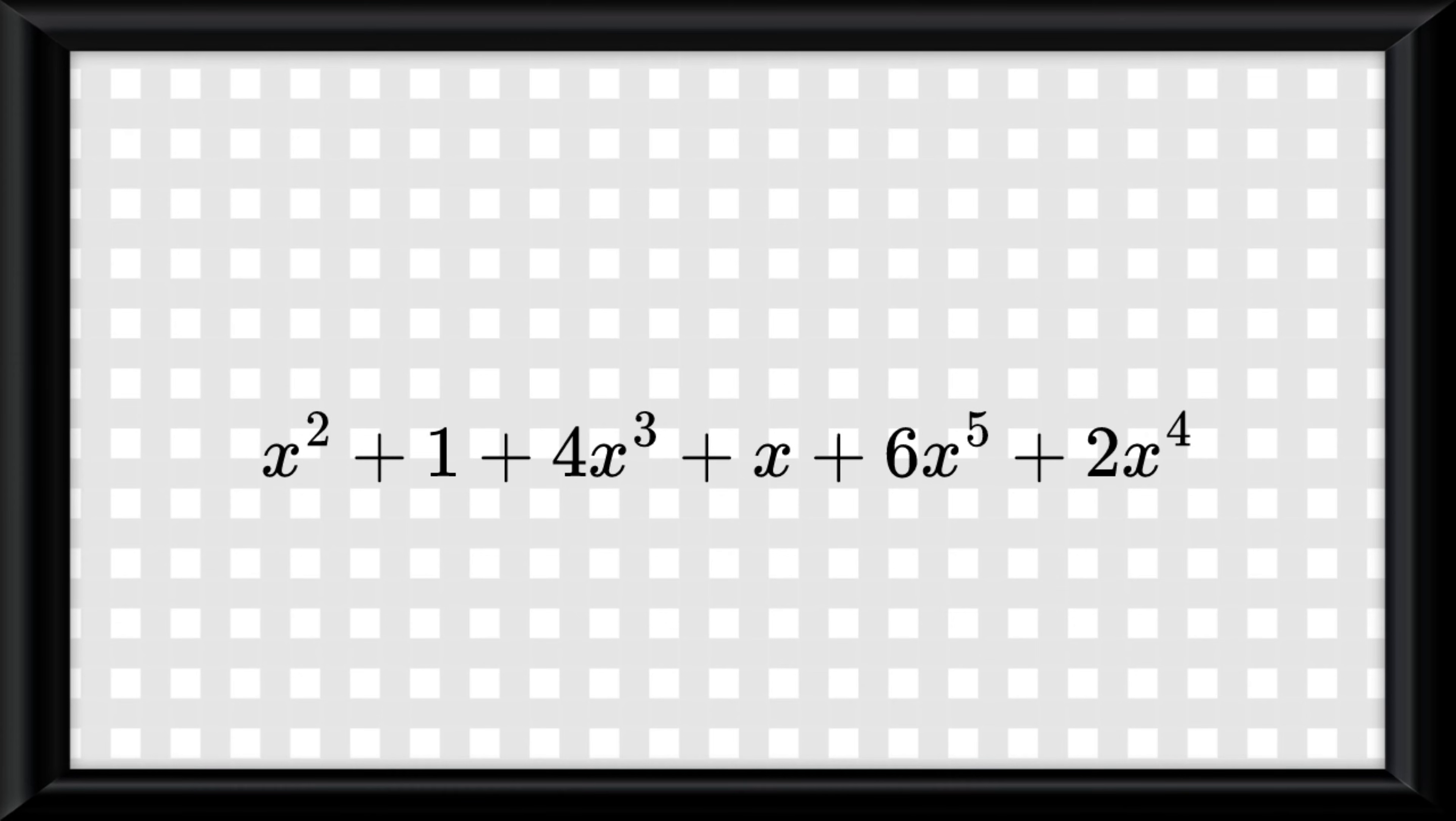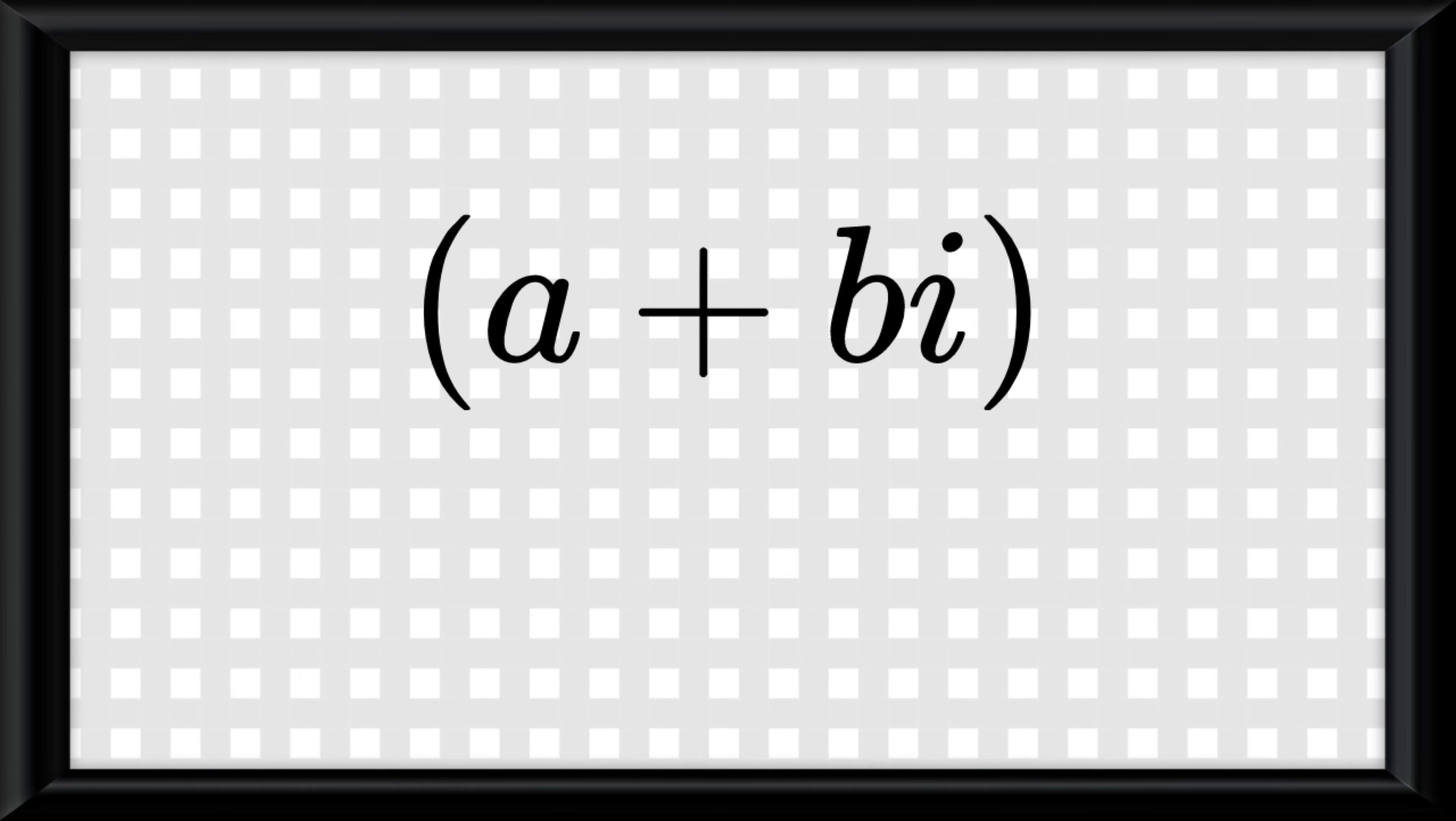So once again, using this problem we would have 5 zeros. Another helpful thing to know is that if you have any solution in an equation that goes in the form a plus bi, then the conjugate a minus bi is also a zero.